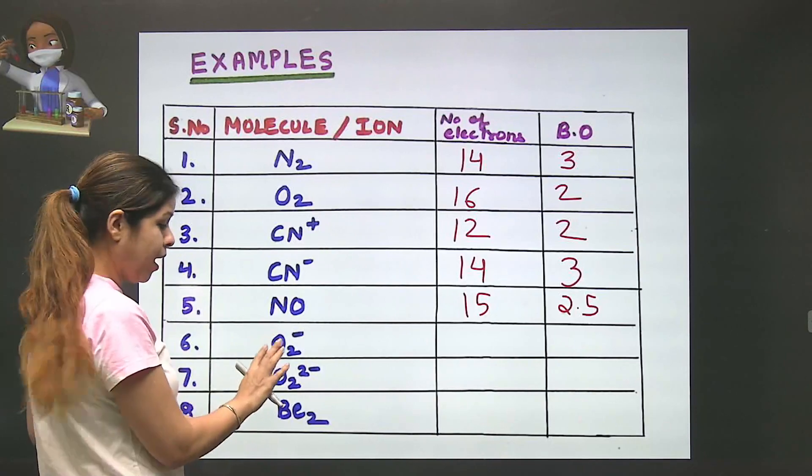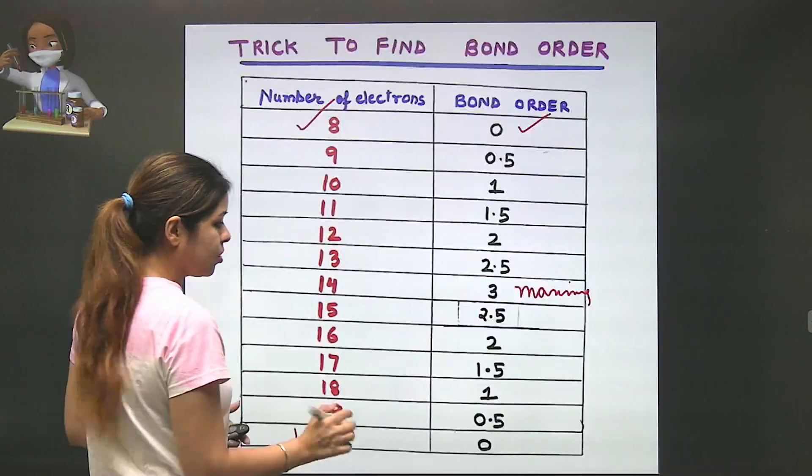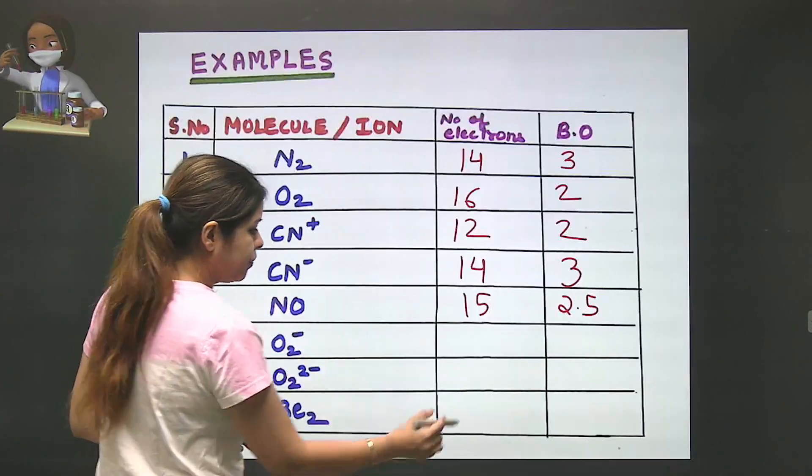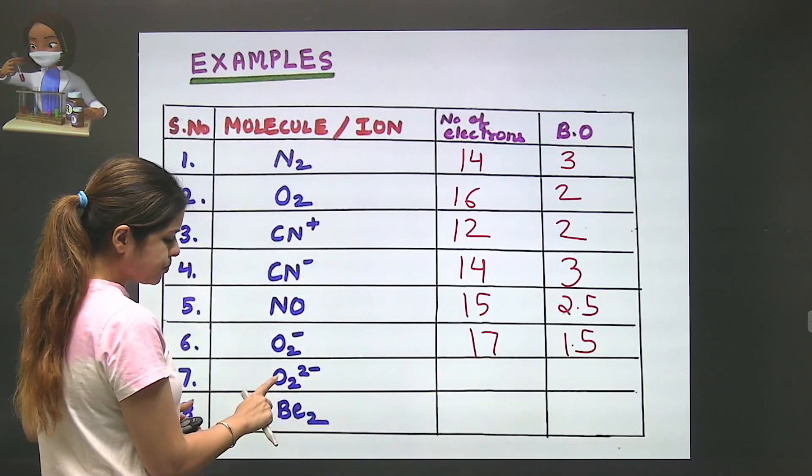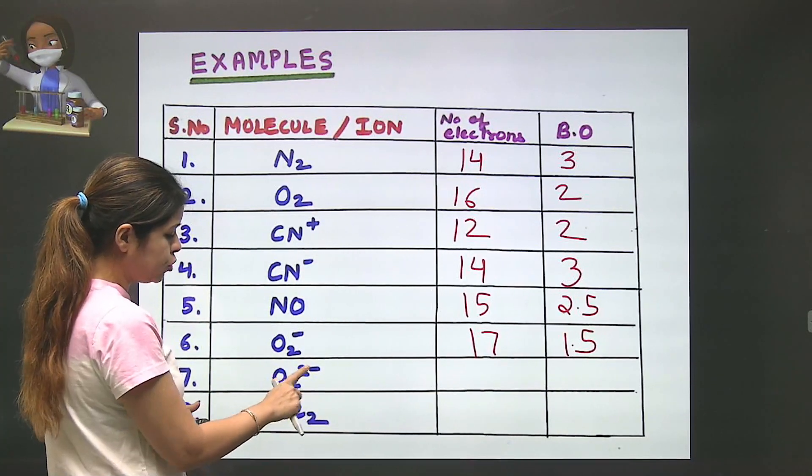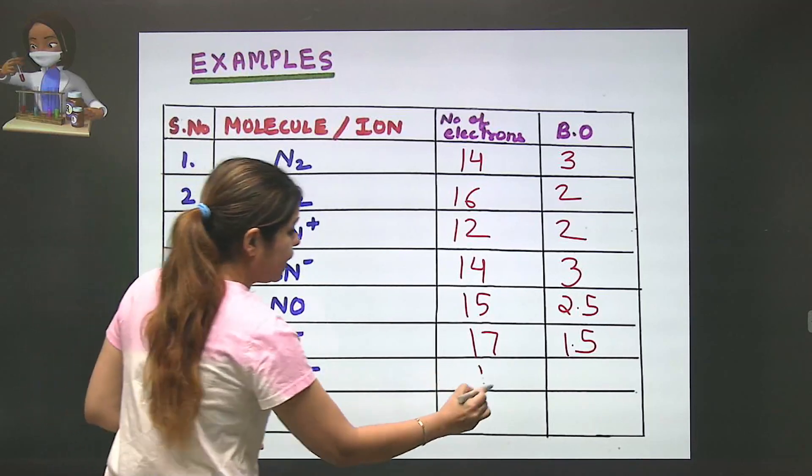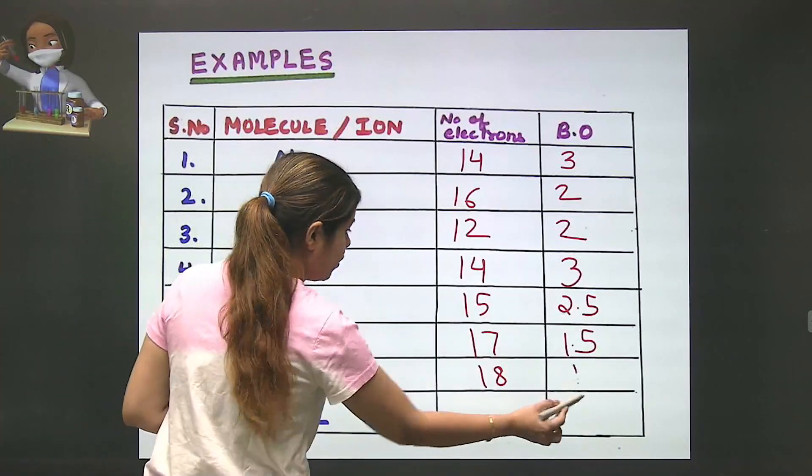Then O2-. Oxygen has 8 and 8, which is 16, plus 1 electron makes 17, so the bond order is 1.5. For O2 2-, 8 and 8 is 16, plus 2 makes 18, so the bond order is 1.